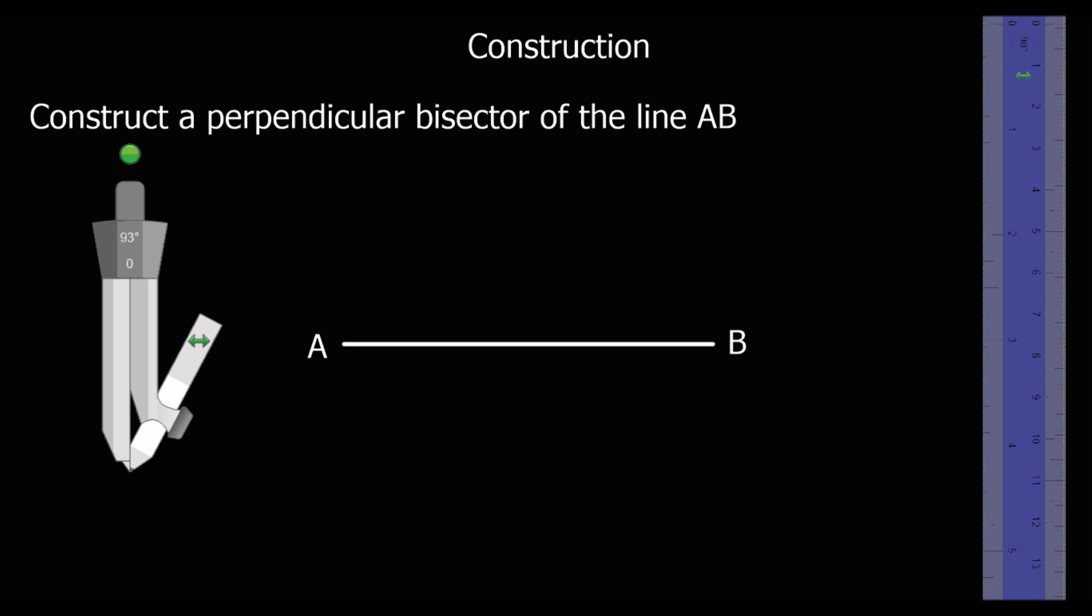This question asks to draw a perpendicular bisector of the line AB. Perpendicular means at a right angle and the bisector is straight through the middle.